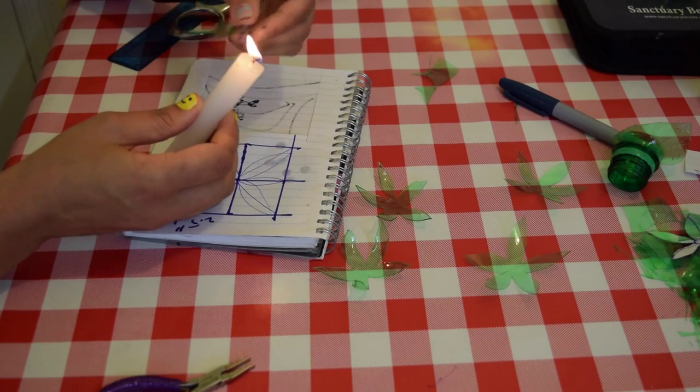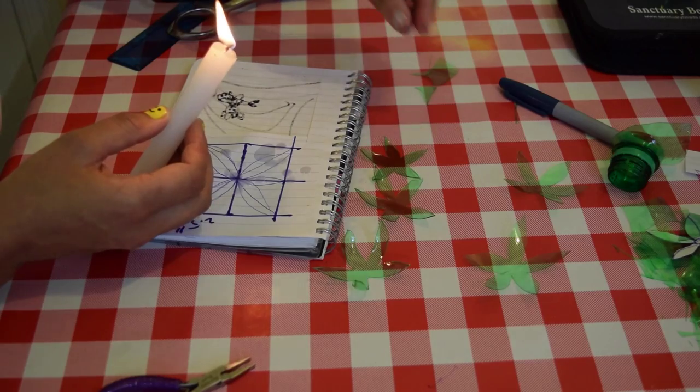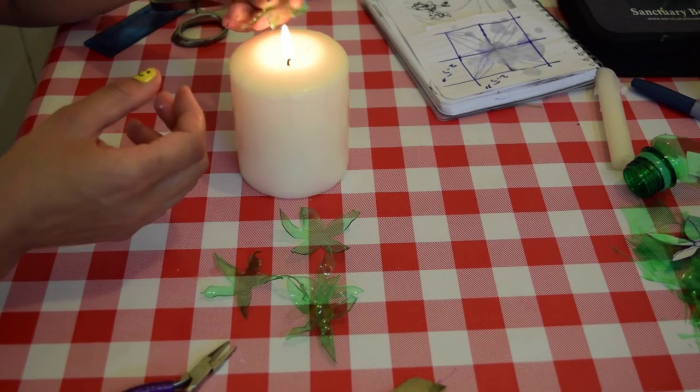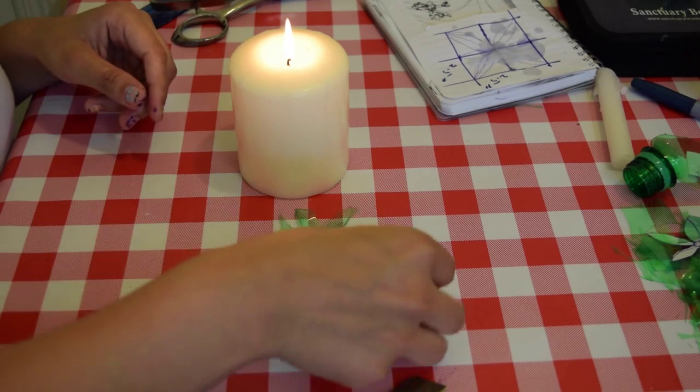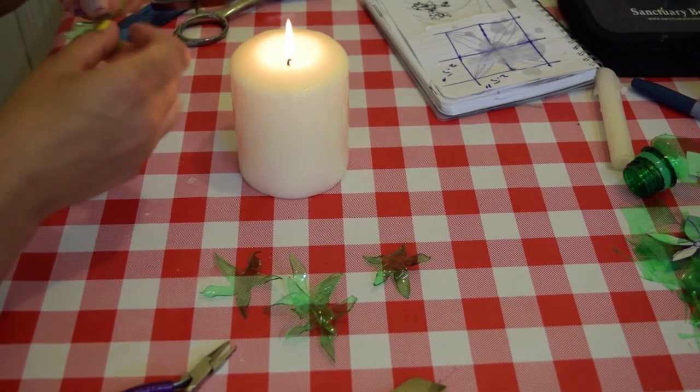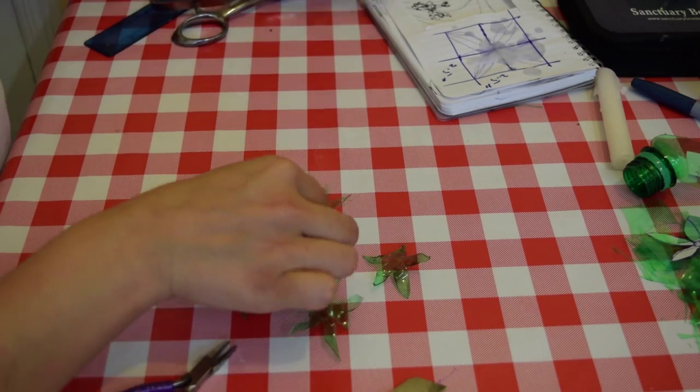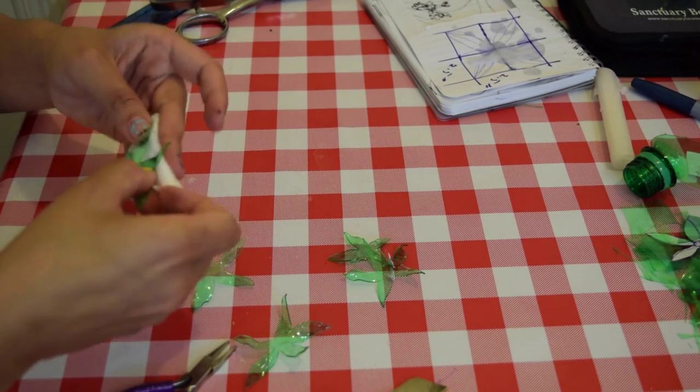Next, let's heat these petals to give them a 3D look. Run the petals very quickly over the flame, as it burns very easily. The heat bends the petals, but you can turn them according to your desire when they're still hot. Now see how these petals look. Clean any carbon on the petals before moving on to the next step.